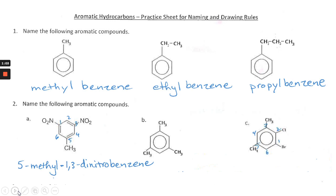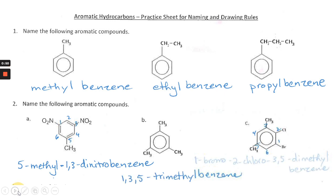It's 5-methyl-1,3-dinitrobenzene — M comes before N, so methyl comes before nitro in the name. The next one is 1,3,5-trimethylbenzene. And the next one after that is 1-bromo-2-chloro-3,5-dimethylbenzene. Bromo begins with B, which comes before C in chloro, which comes before M in methyl. So the substituents are placed in alphabetical order — not number order, alphabetical order.